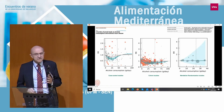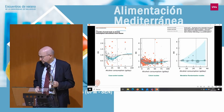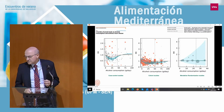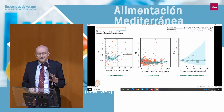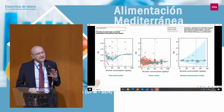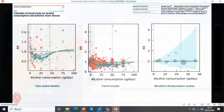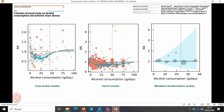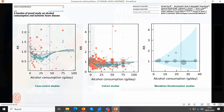This is a very recent paper published in Nature Communications. In the left panel there are 27 case-control studies; in the middle panel, 95 cohort studies; and on the right side, five Mendelian randomization studies. In case-control and cohort studies you see this J-shape association, with the nadir — the lowest point — at 23 grams per day of alcohol. But there is no association whatsoever in the Mendelian randomization studies.